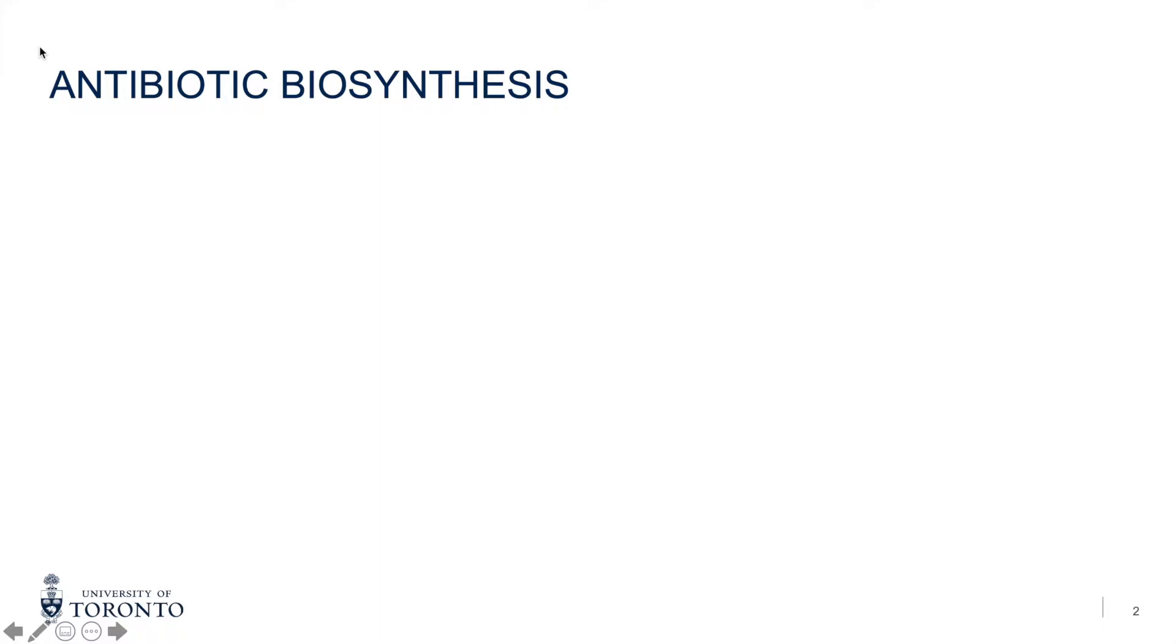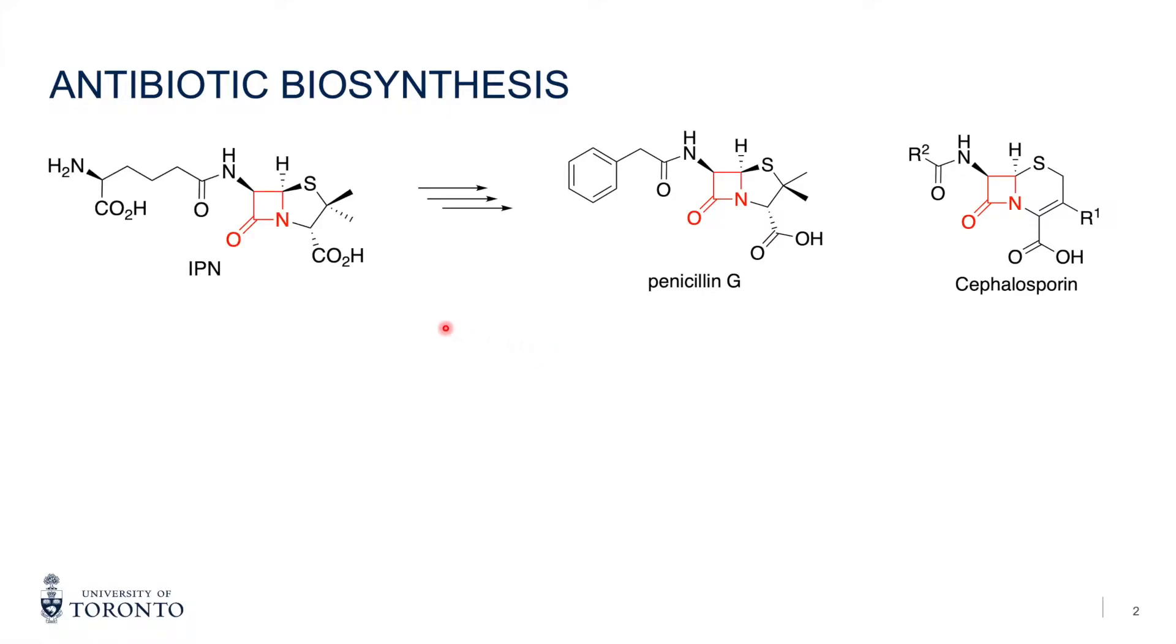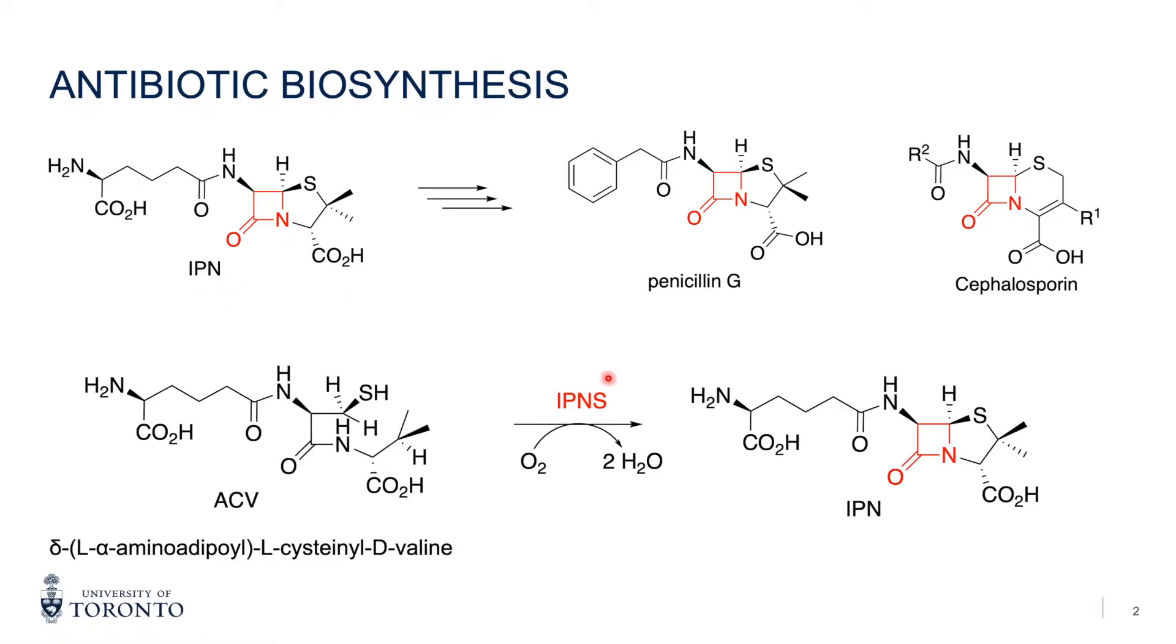First of all, what is IPNS? In the context of biosynthesis, many antibiotics like penicillin and cephalosporin contain a beta-lactam ring as indicated by the red color. The precursor for these is isopenicillin or IPN. IPNS is the enzyme that catalyzes the beta-lactam formation from ACV, which is a tripeptide molecule.